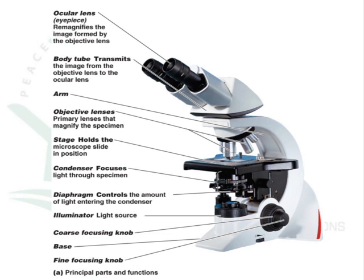The microscope, starting from the bottom, has a base, along with coarse and fine focusing knobs, an illuminating light source, a diaphragm to control the condenser lens, and a stage to hold the sample. It has an objective lens with 10x, 45x, and 100x magnifications, a body tube, and an ocular lens — here it is binocular, so two ocular lenses are present. These are the different parts of an ideal optical or light microscope.